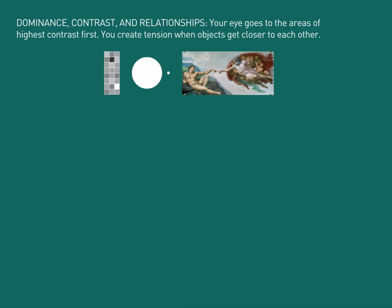A lot of people think your eye goes to red first. But if you have a field of red roses and one white rose, your eye will go to the white rose first. So it's not just red or certain intrinsic colors — it's all about relationships.